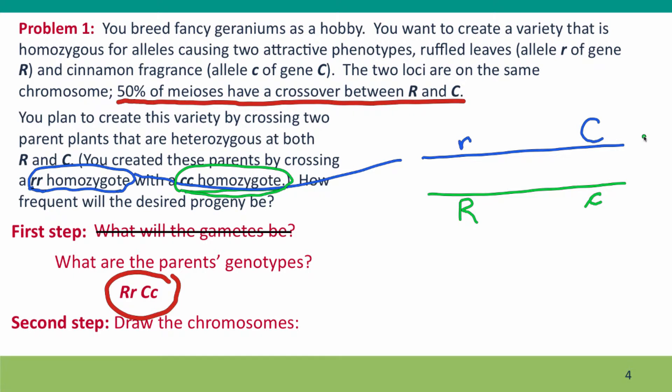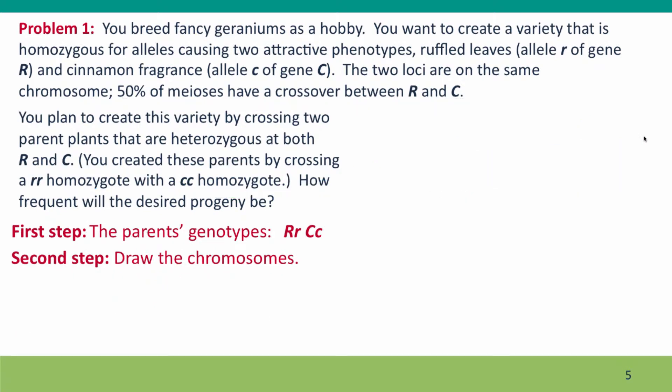The next step is to figure out what are the gametes going to be. This is where you have to think about the consequences of crossing over. So again, we'll draw the parent's chromosomes. We've got the blue chromosome, which has little r, big C, and we've got the green chromosome, which has big R, little c. What are the gametes going to be?